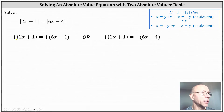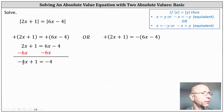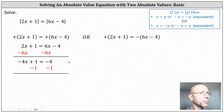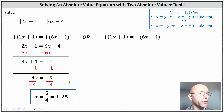Going back to the left, when we take the positive expressions we can simply drop the parentheses and solve for x. Let's subtract 6x on both sides to get the x terms on one side. Simplifying, we have negative 4x plus 1 equals negative 4. Next, subtract 1 on both sides. Simplifying, we have negative 4x equals negative 5. Finally, we divide both sides by negative 4, giving us x equals positive five fourths or 1.25.